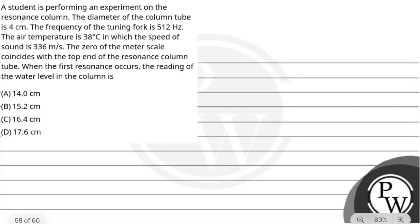Hello, let's see this question. A student is performing an experiment on a resonance column. The diameter of the column tube is 4 cm. The frequency of the tuning fork is 512 Hz and the air temperature is 38°C, in which the speed of sound is 336 m/s. The zero of the meter scale coincides with the top end of the resonance column tube. When the first resonance occurs, the reading of the water level in the column is - our options are: (A) 14 cm, (B) 15.2 cm, (C) 16.4 cm, and (D) 17.6 cm.